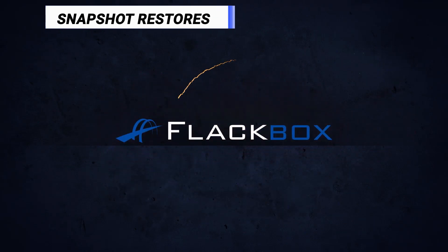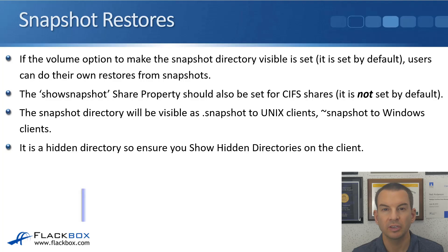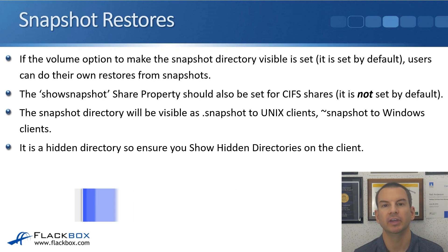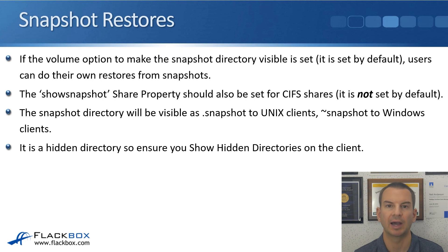In this lecture, you'll learn how to do restores from snapshots using either the ONTAP command line or from client hosts. If the option to make the snapshot directory visible is set on a volume, and it is by default, then users can do their own restores from snapshots. But if you don't allow that option, you can still do restores from snapshots, but you as the administrator will have to do it from the ONTAP command line.